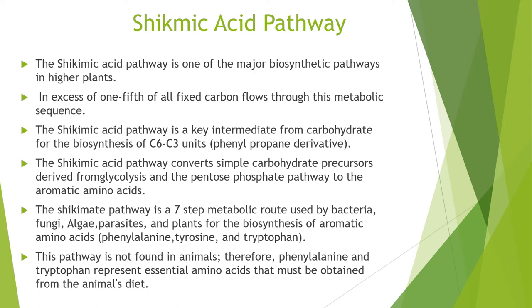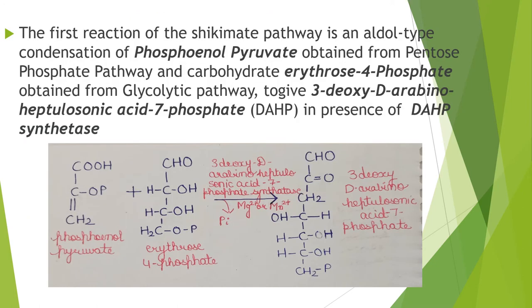Therefore, phenylalanine and tryptophan represent essential amino acids that must be obtained from the animal's diet. The first reaction of the shikimate pathway is an aldol-type condensation of phosphoenolpyruvate, obtained from the pentose phosphate pathway, and erythrose-4-phosphate, obtained from the glycolytic pathway.